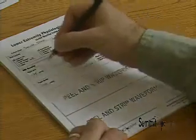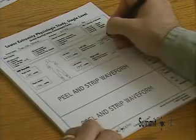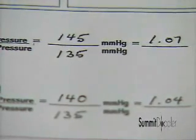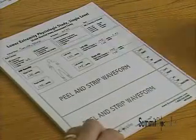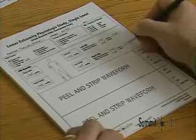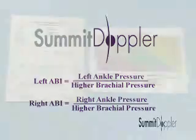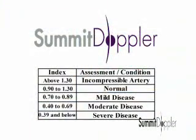Now we are ready to complete the LifeDop ABI report form. When calculating the ABI, always use the higher of the two brachial pressures. If the difference between the two brachial pressures is 20 mmHg or more, recheck the brachial pressures and consider further upper extremity testing if the variance is repeatable, as a variance greater than 20 mmHg could indicate an upper extremity occlusion. For both sides, divide the ankle pressure by the higher of the two brachial pressures. Summit provides a convenient chart for determining the ratio.